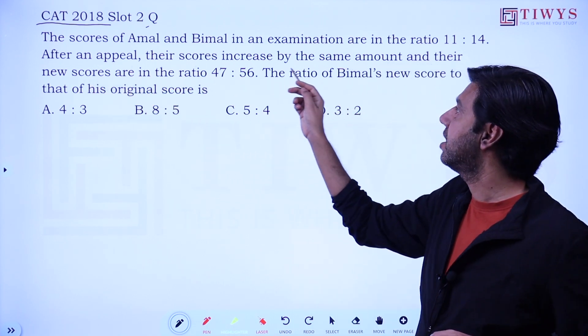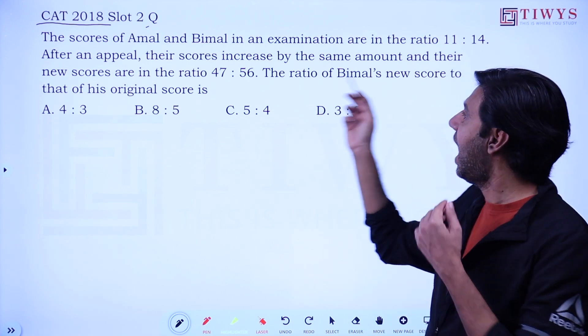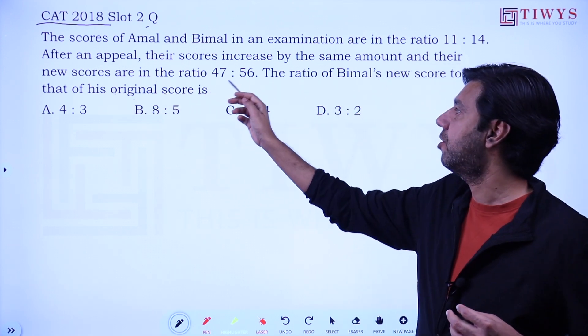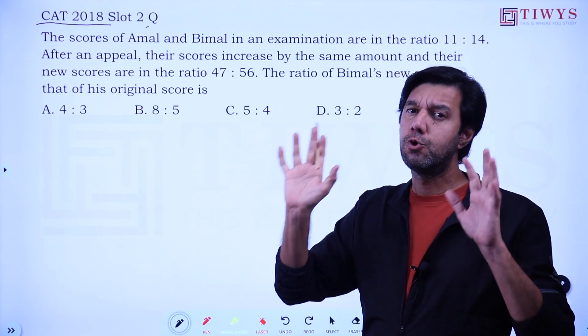After an appeal, their scores increase by the same amount, so the two values change, and their new scores are in the ratio 47:56. It's a very standard scenario of two ratios being given.